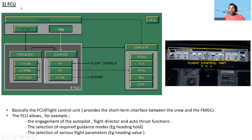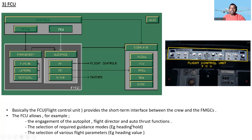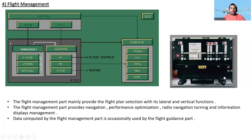FCU means Flight Control Unit. The Flight Control Unit provides the short-term interfaces between the crew and the FMGC — long-term is provided by the MCDU, and short-term by the FCU. The FCU allows for example the engagement of autopilot, flight director, and auto thrust functions, and the selection of required guidance modes such as heading hold, and the selection of various flight parameters such as heading value.